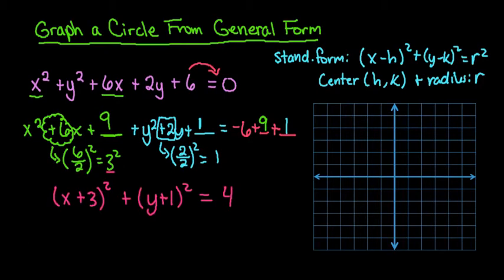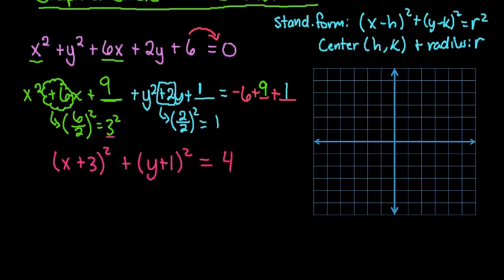And like I said, once we get it into standard form, it's very easy to find our center and the radius of our circle. So our center is whatever value is being subtracted from x. So because I have x + 3, that means that I'm really doing minus negative 3.